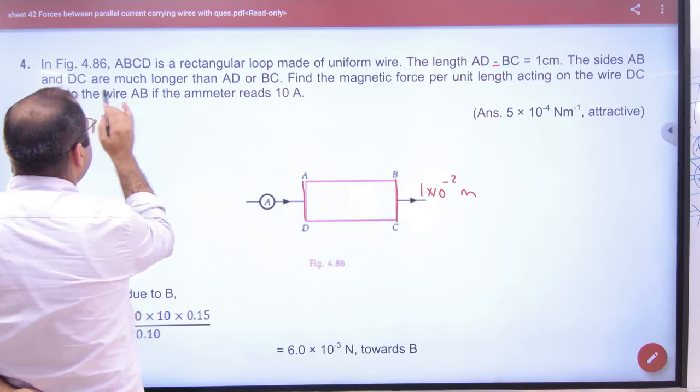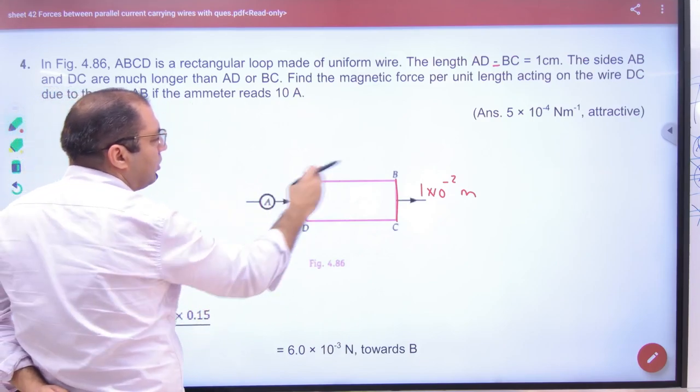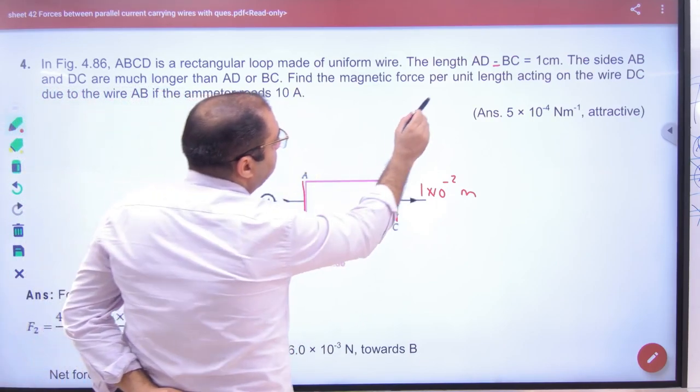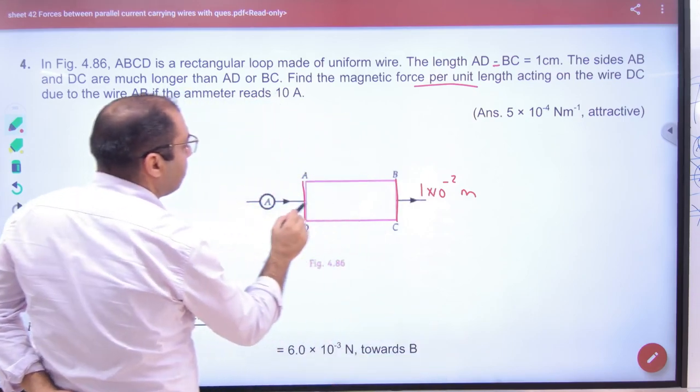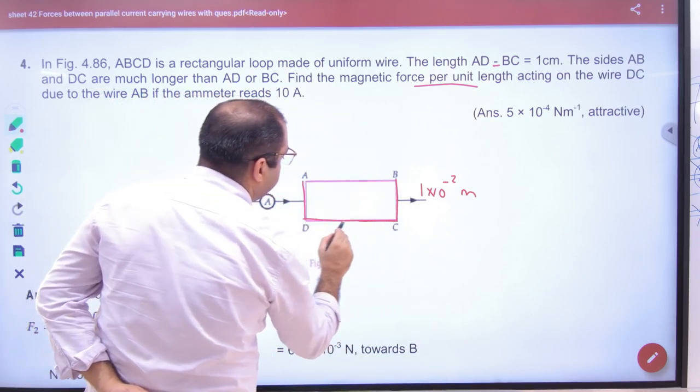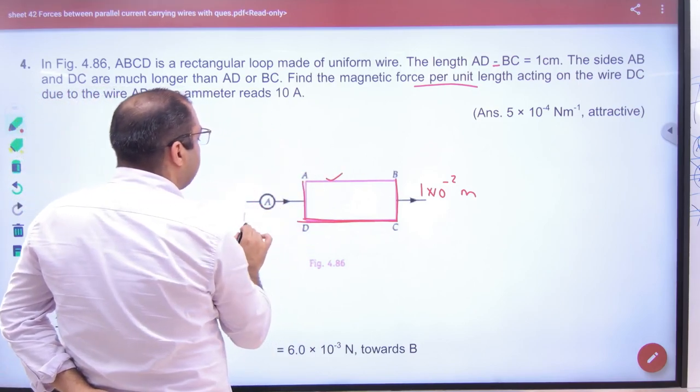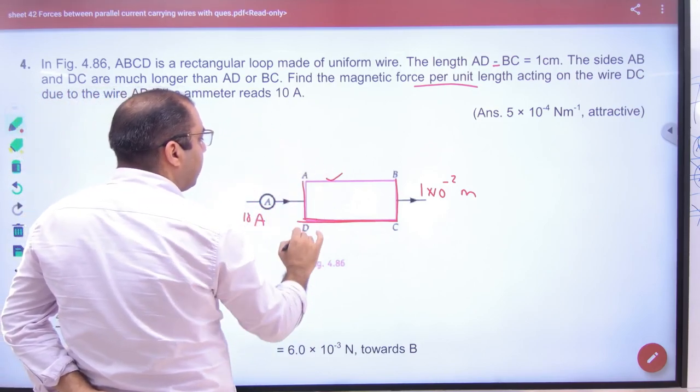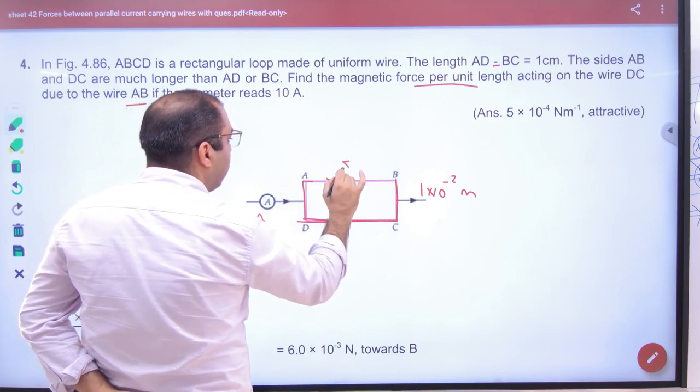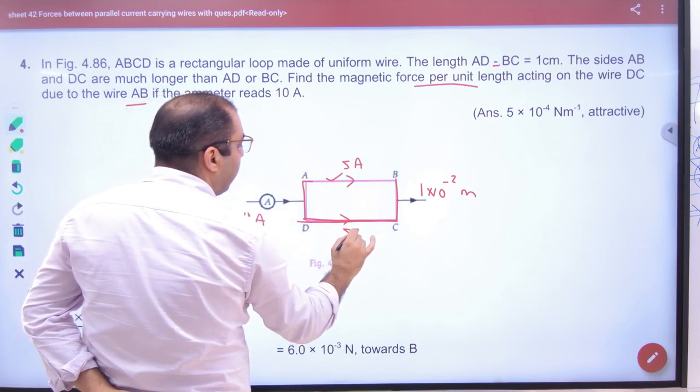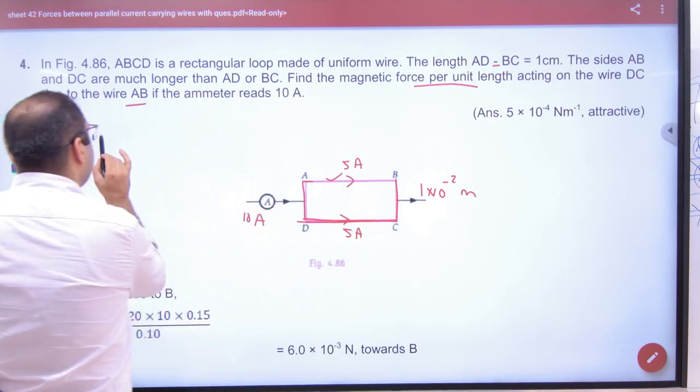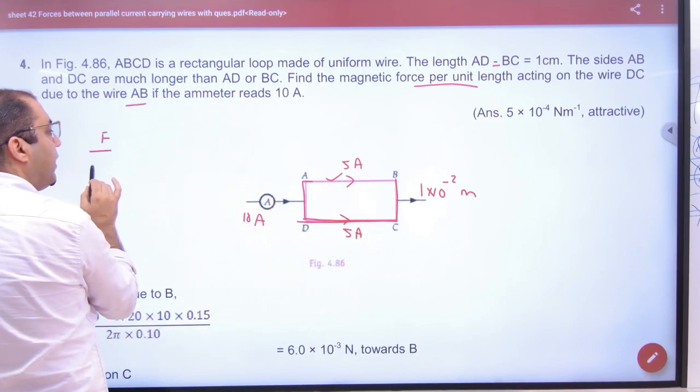Sides AB and DC are much longer than AD. They are quite long wires. Force per unit length on wire DC due to wire AB. Current is 10 ampere. 10 ampere is equal distribution, so this is 5 ampere and this is 5 ampere.